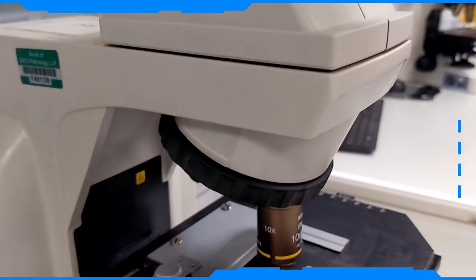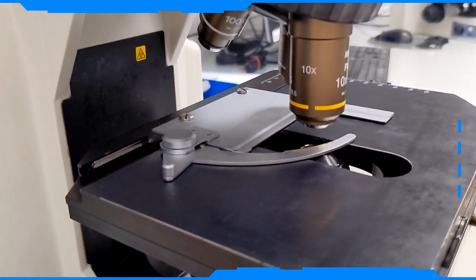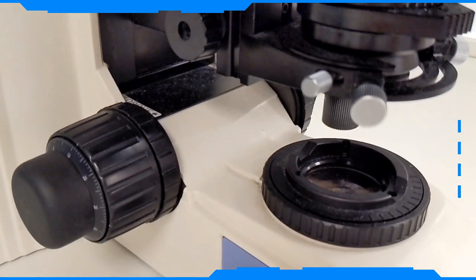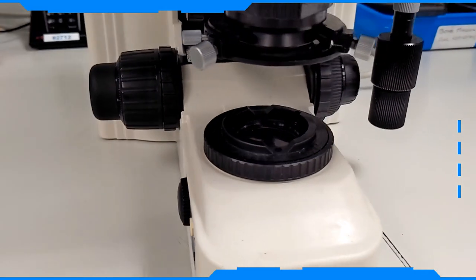Before we start reporting blood films, it is important to ensure the microscope has been set up properly for use, whether this is at the beginning of a day or the beginning of a shift. Taking another step back, it is useful to know what the main parts of a microscope are and what they do.